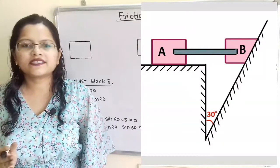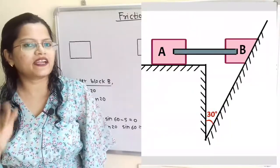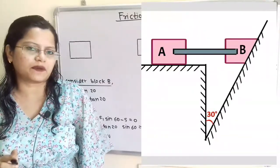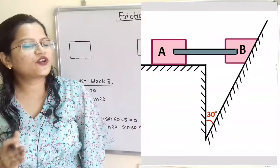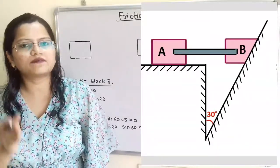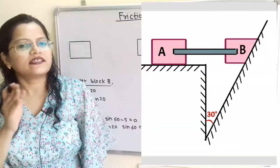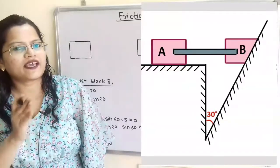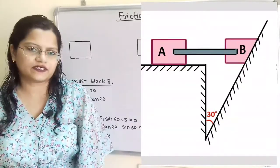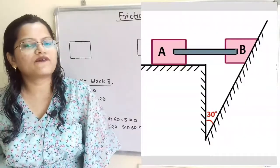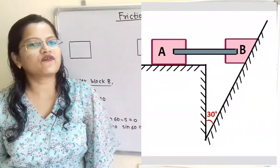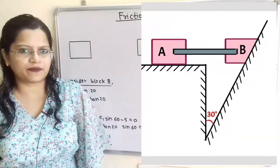In this question, two blocks A and B are connected with a horizontal rigid bar. If we observe the diagram, block B is having some slope, and this slope rests on the fixed inclined surface. We have to find out the weight W of block A so that the force system is in equilibrium.